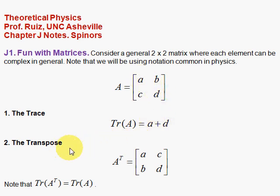The transpose is given by swapping the off-diagonal components, so you put C up where B is and B down there where C is.